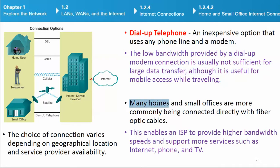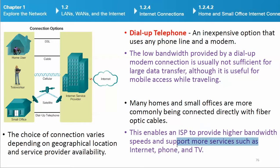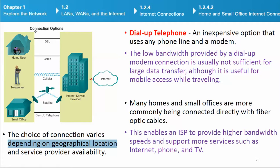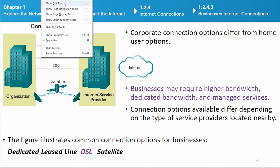Many homes and small offices are increasingly being connected directly with fiber optic cables. This enables an ISP to provide higher bandwidth speeds and support more services such as Internet, phone, and TV. The choice of connection varies depending on geographical location and service provider availability.